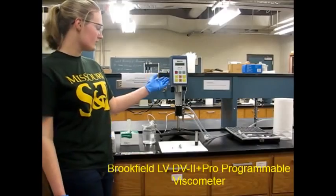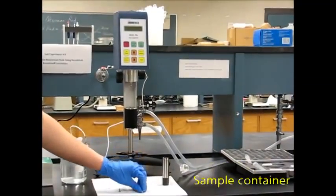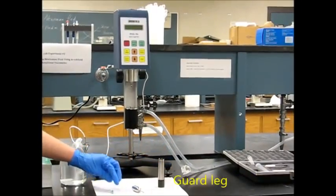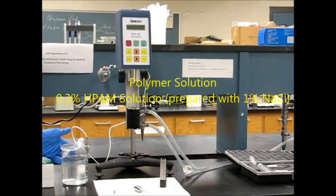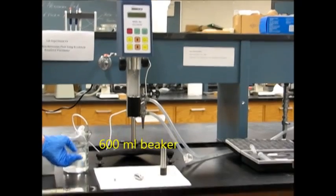The equipment required is this viscometer, the spindle, the sample container, the guard leg, the polymer solution, and a 600 milliliter beaker.